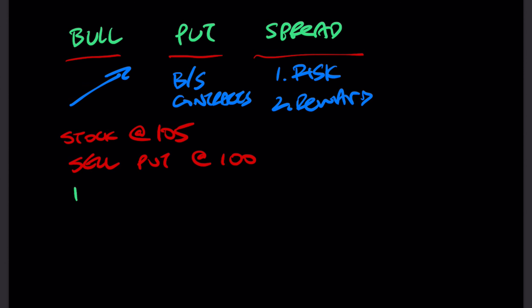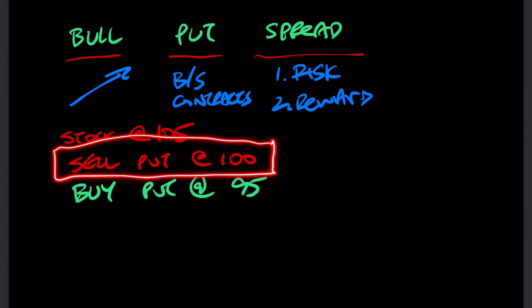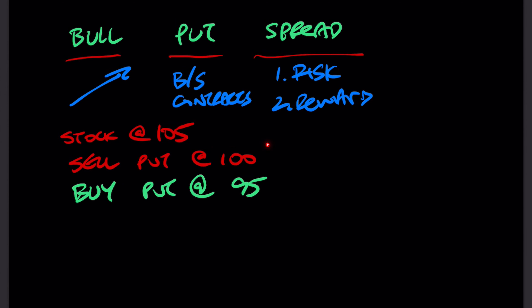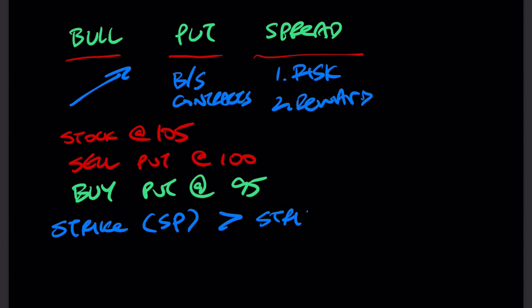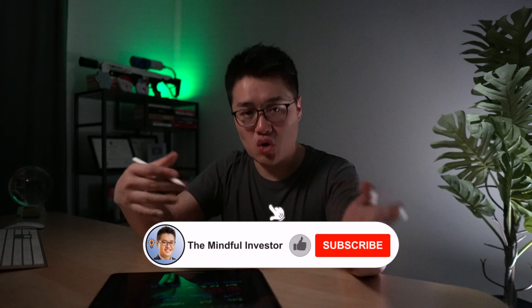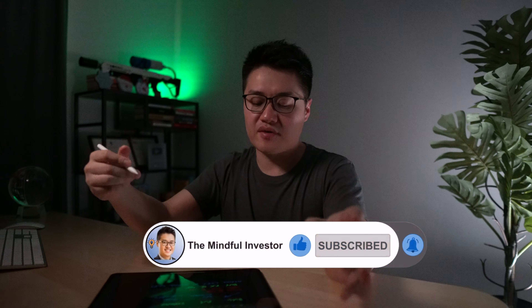Here comes the second part, where we buy a put as insurance. We're buying a put at $95. The condition is that the strike price of the contract you sold at $100 must be higher than the strike price of the contract you're buying. So in our example, $100 is higher than $95. The strike of your short put must be greater than the strike of your long put — long meaning buy, short meaning sell.